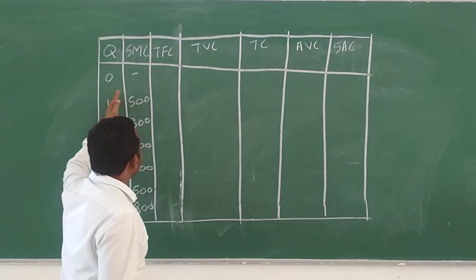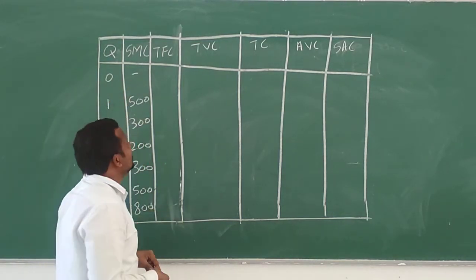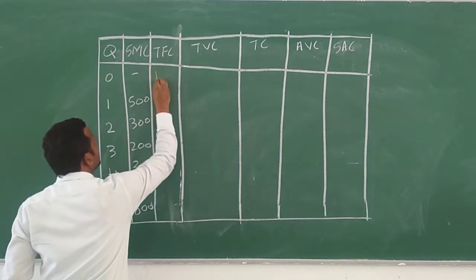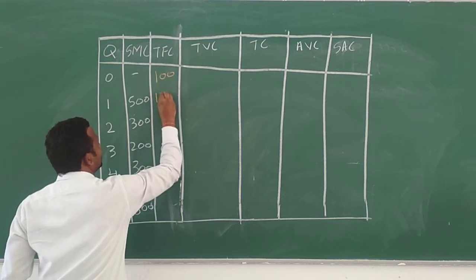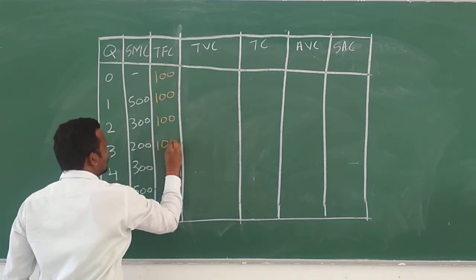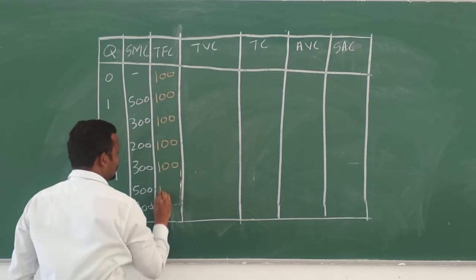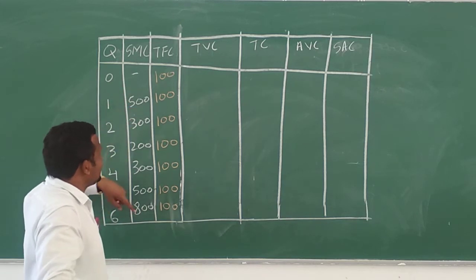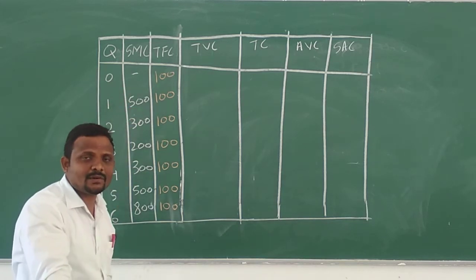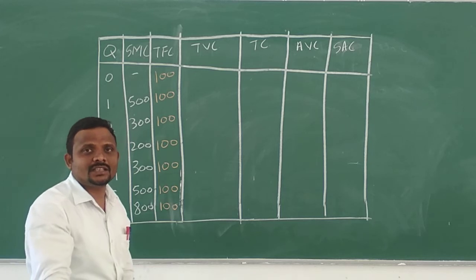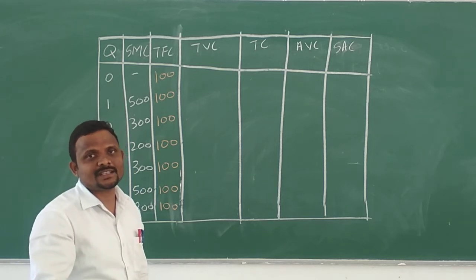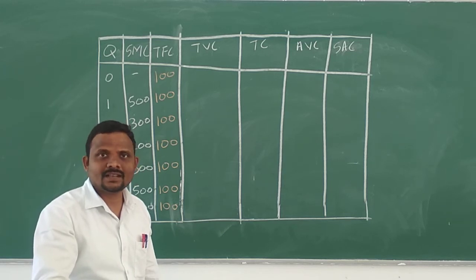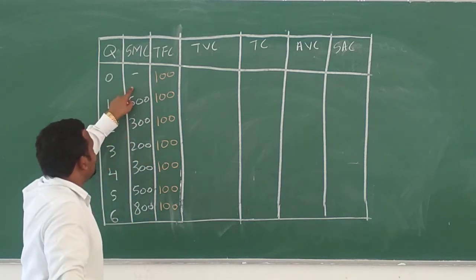We have columns for Q — quantities — and SMC. TFC is given; total fixed cost is given. See, the SMC changes, but TFC never changes, because that is total fixed cost — the cost that does not change with respect to changes in output. Such a cost we call total fixed cost.